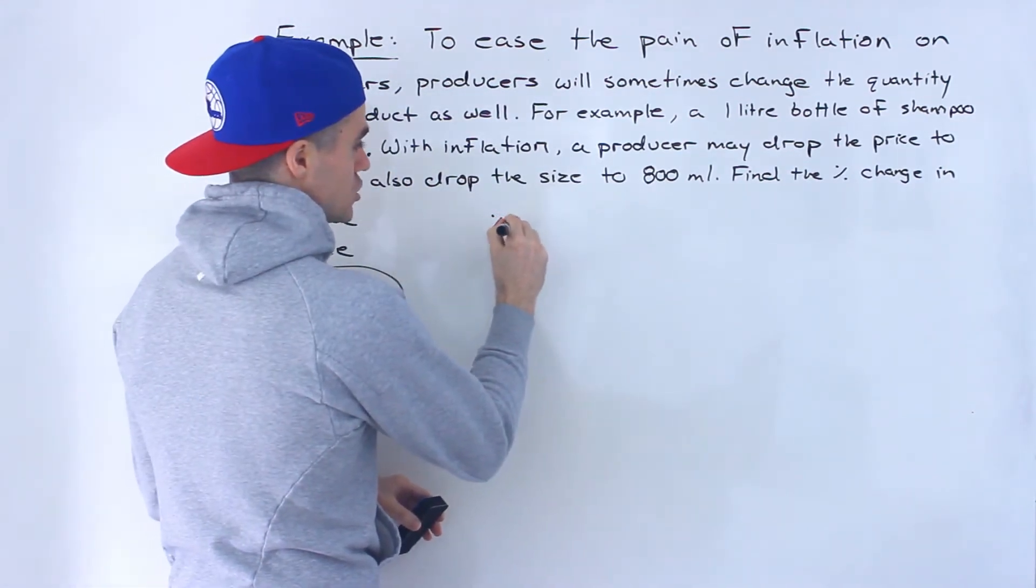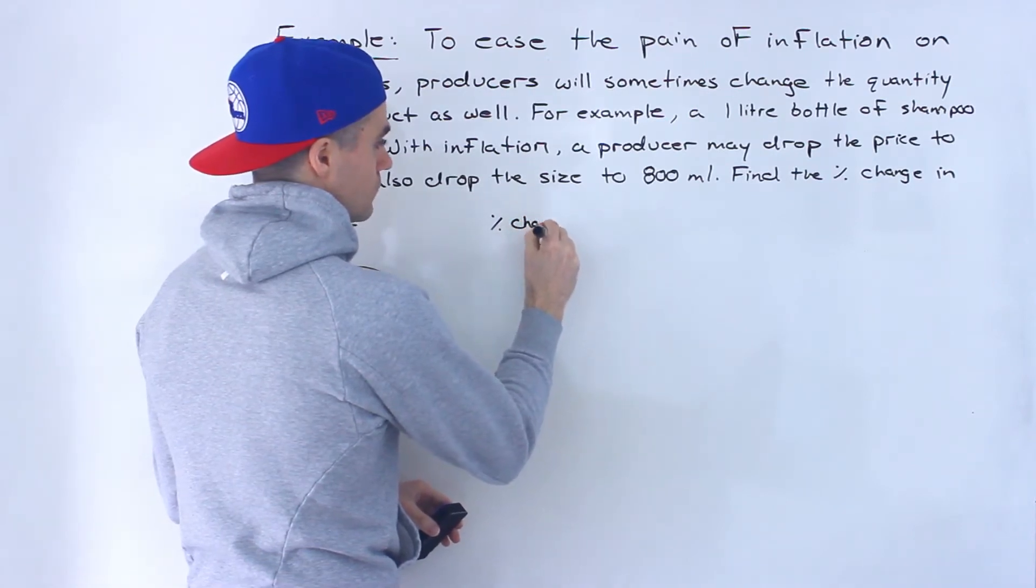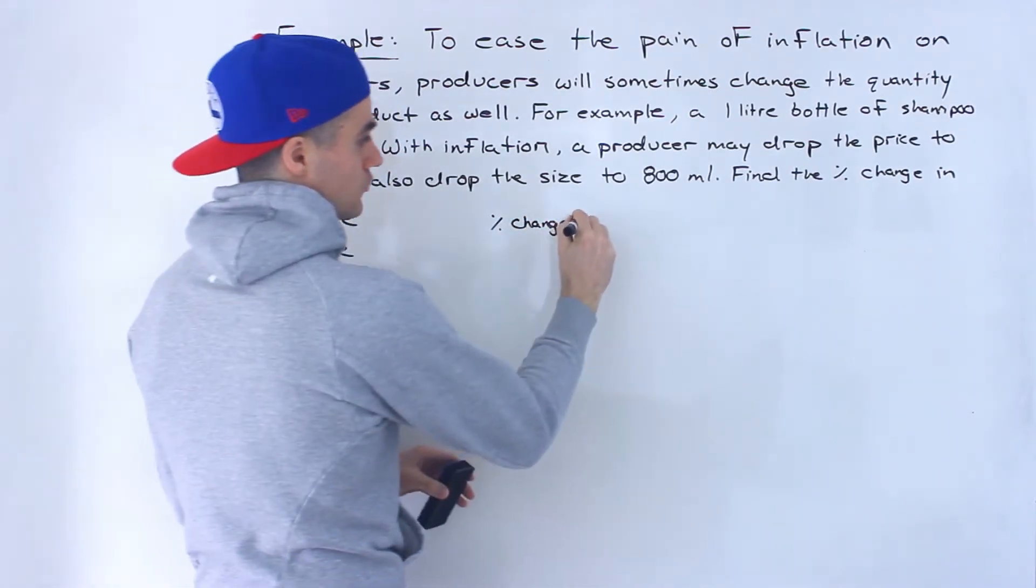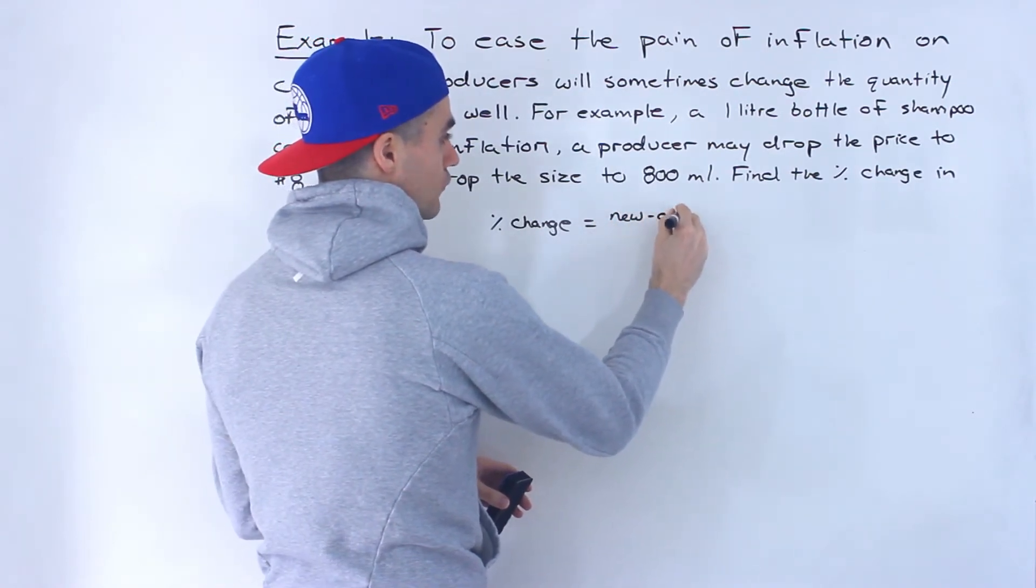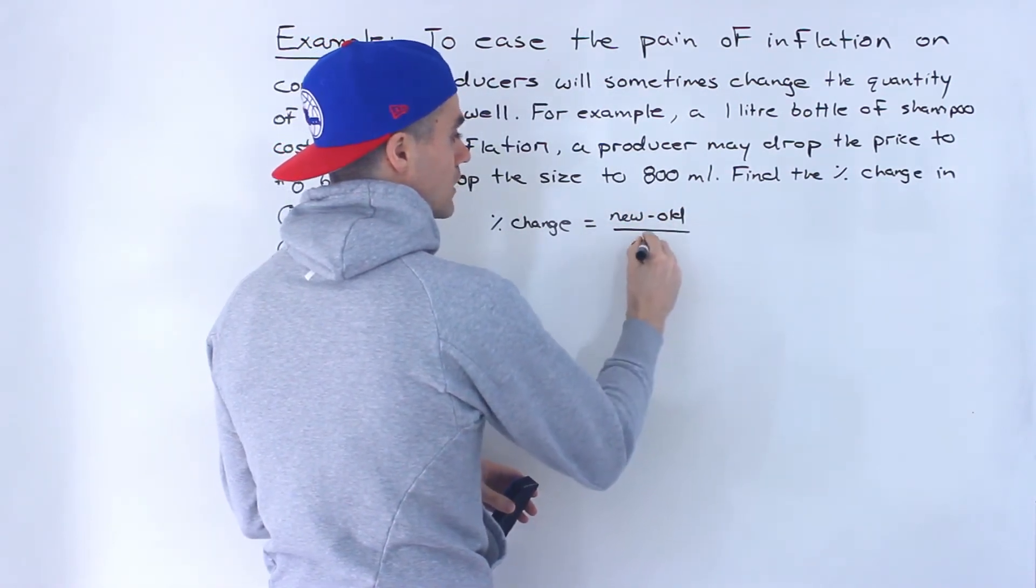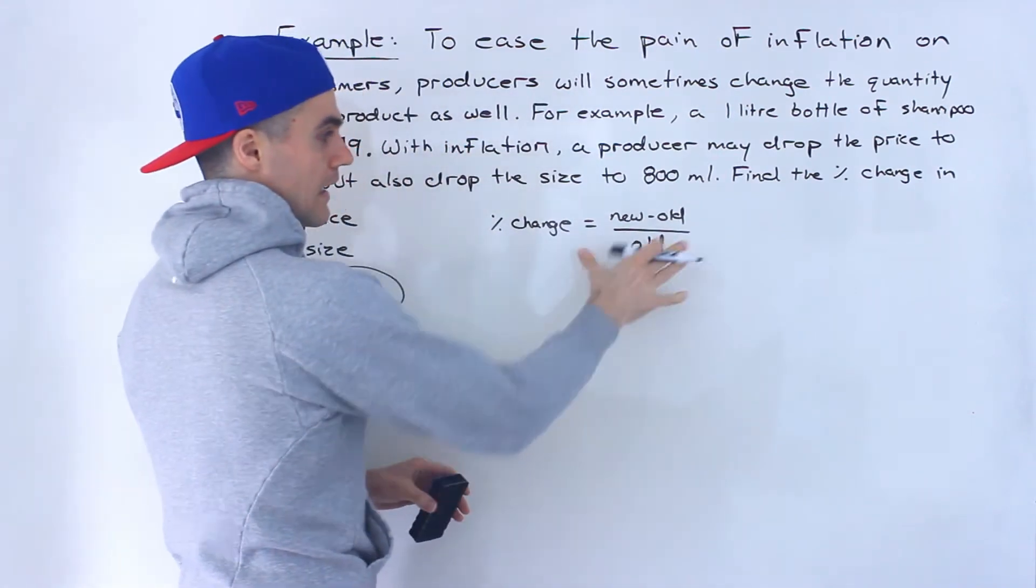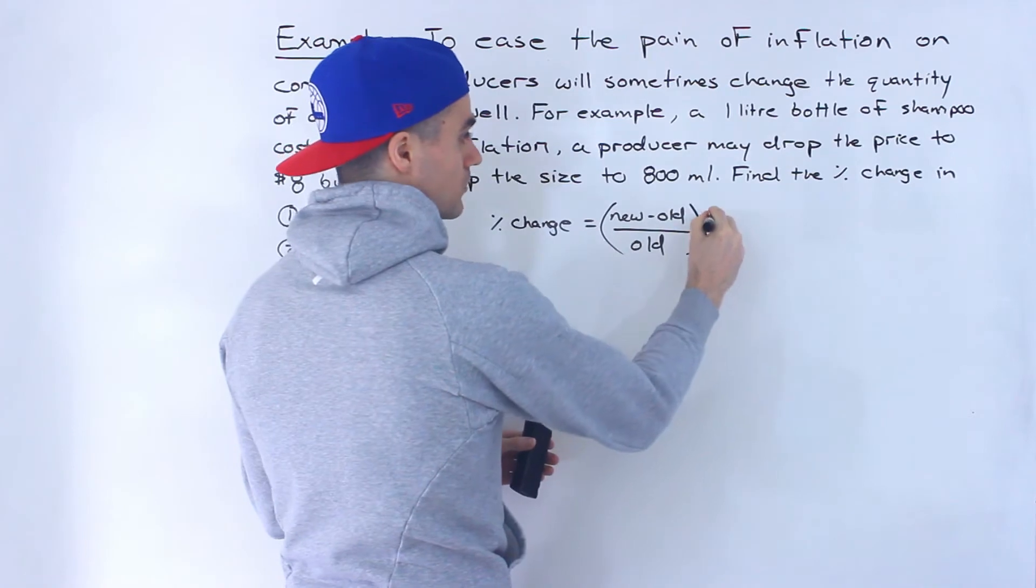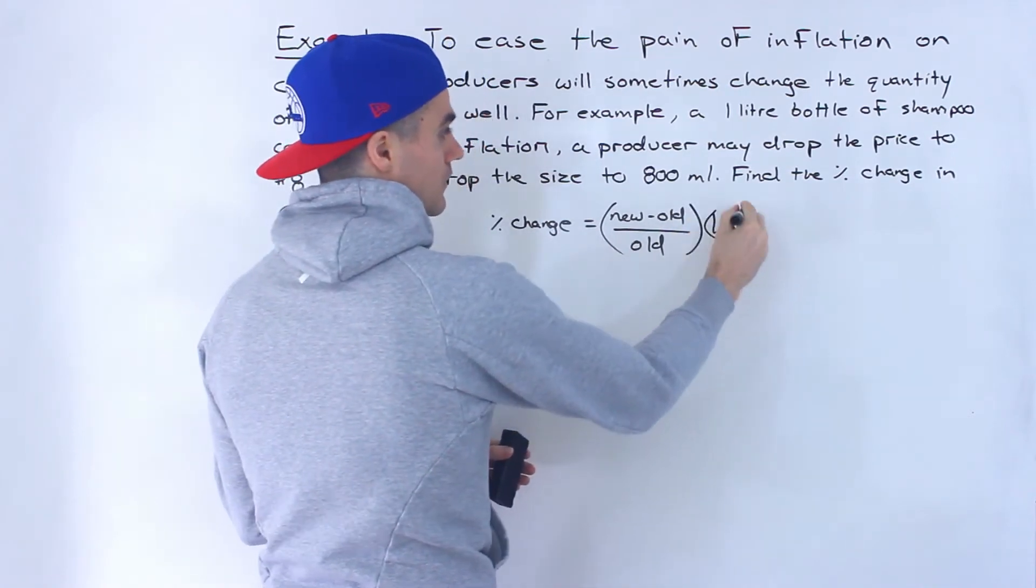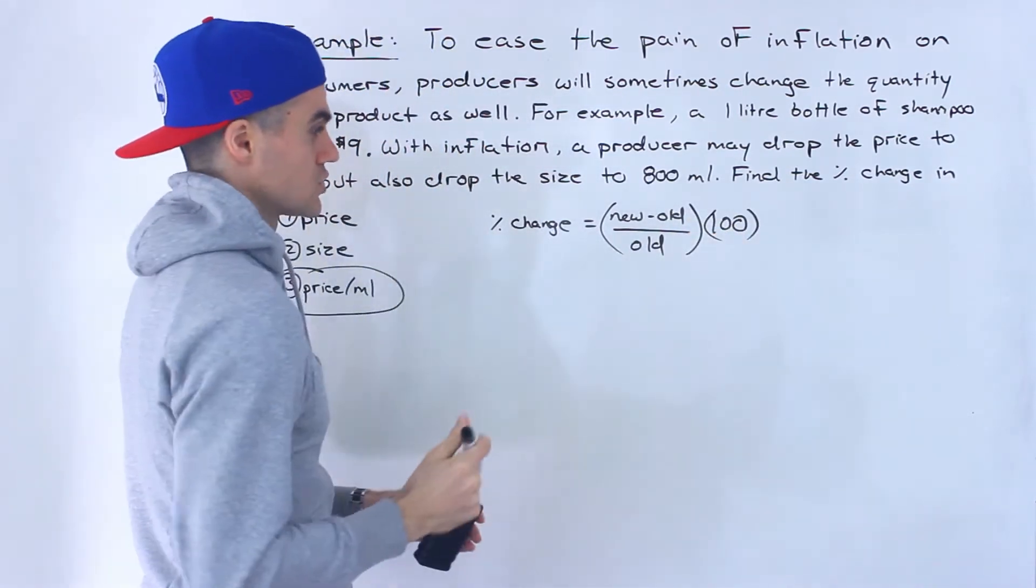So in general, percentage change in anything is equal to the new value minus the old value all over the old value. And this would give you the decimal change, so you would have to multiply by 100 to get the percentage change.